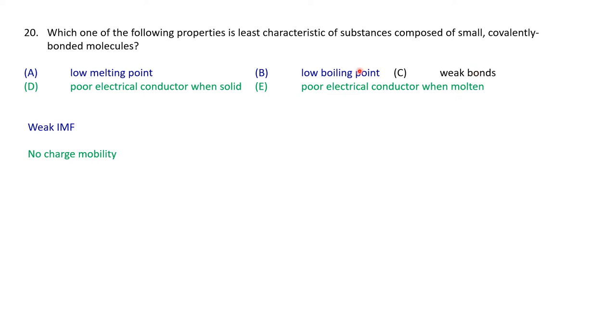So therefore, we're left with which of these is least characteristic: weak bonds. Well, they have weak intermolecular forces, but the bonds within the molecule are covalent bonds, which are nice and strong. So this is least characteristic. They don't have weak bonds. They have weak intermolecular forces.